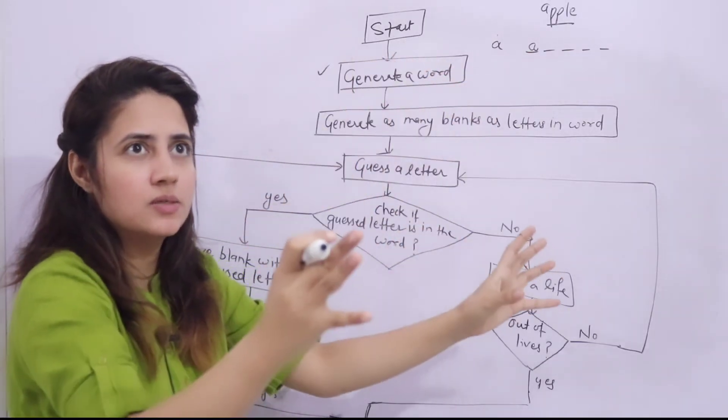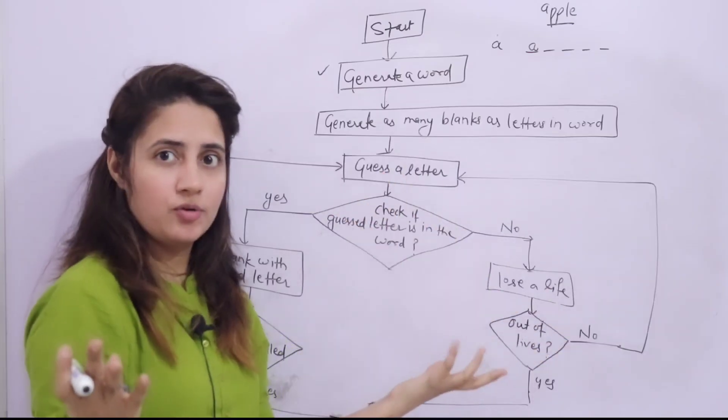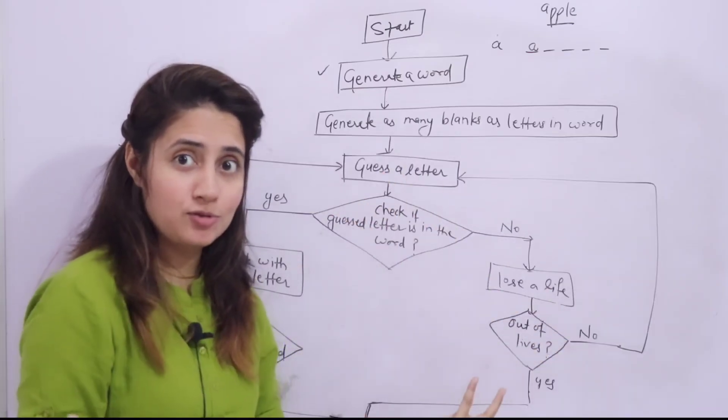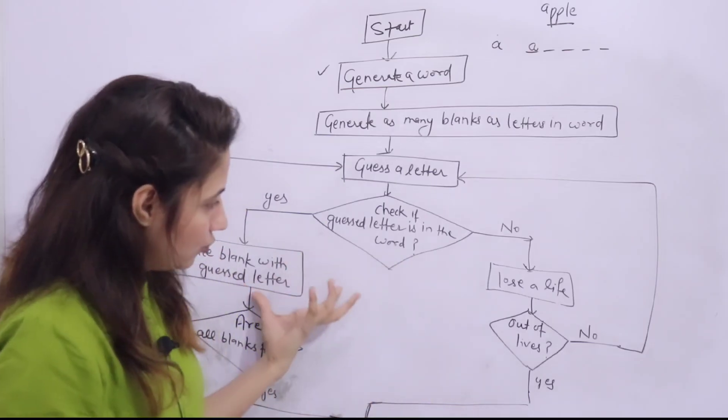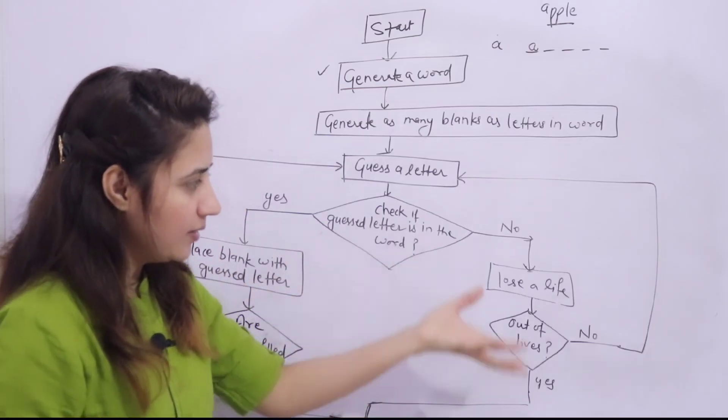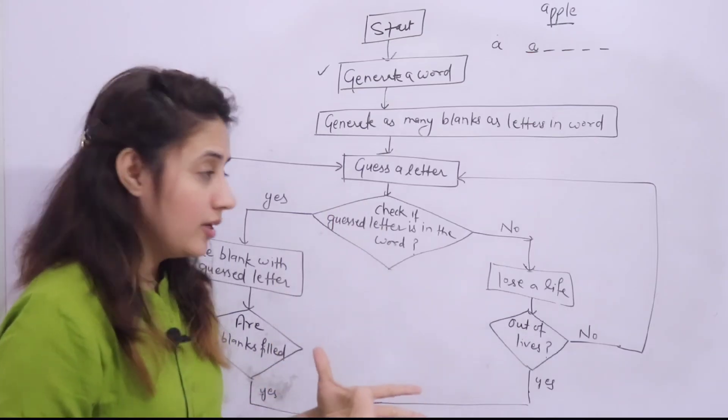If you are aware about this random module, then you can do this easily. So what knowledge you have to use - till now what you have learned like random module, for loop, while loop, membership operators also like 'in', 'not in', these kind of things you have to use to make this project.